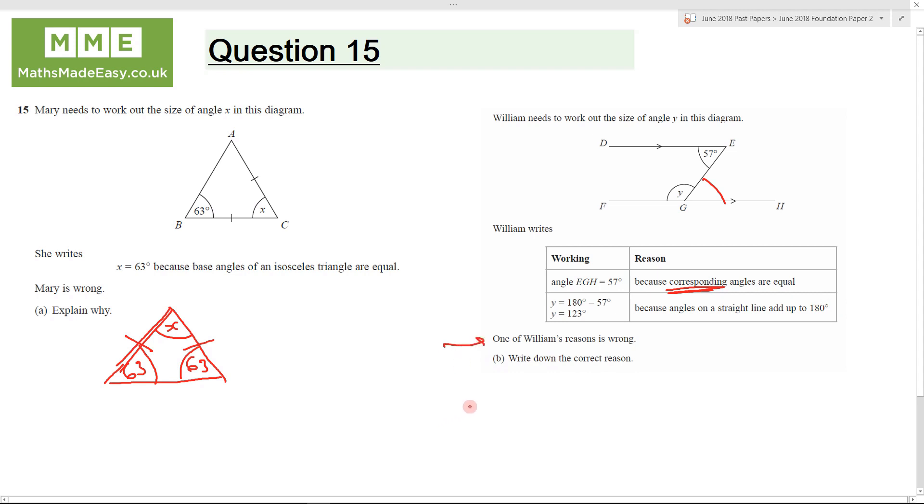One of William's reasons is wrong. Write down the correct reason. The correct reason is that EGH is 57, however it is because they are alternate angles, not corresponding angles. So the reason you would give is they are alternate angles. And that is the end of question 15.